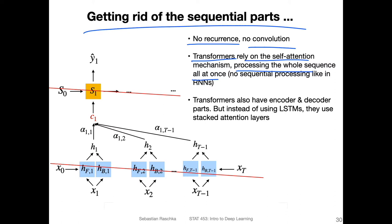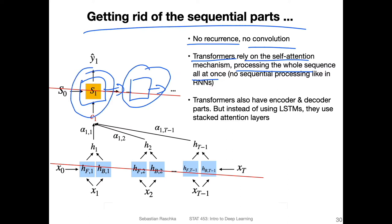This is actually great for parallelization. Transformer models are pretty expensive to train, but they are better at utilizing multiple GPUs because you can train them in parallel. With an RNN, you generate one thing at a time, so you can't run them in parallel — you have to finish one step before computing the next. Transformers are much better at parallelizing computations. Similar to the RNN many-to-many architecture, we will also have an encoder and a decoder part, but instead of using RNNs or LSTMs, we use something called stacked attention layers.